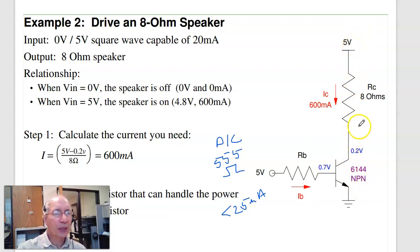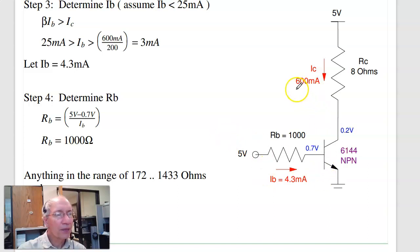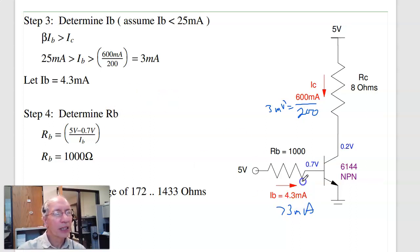To power the speaker: 5 V through the 8-ohm speaker to the transistor to ground. When the transistor is on, current is (5 − 0.2) / 8 = about 600 mA. When off, zero mA. To find RB to saturate: IC / beta. Beta for the 6144 is between 200 and 500 — use worst case 200. 600 mA / 200 = 3 mA minimum IB. I chose 4.3 mA, giving RB = (5 − 0.7) / 4.3 mA = 1,000 Ω. As long as IB is between 3 mA and 25 mA, this will work.